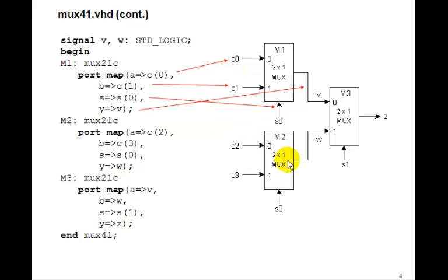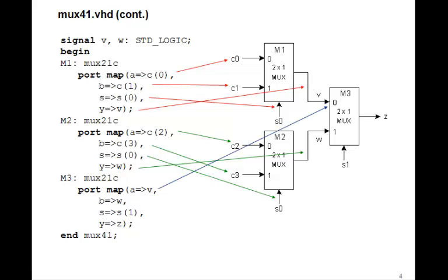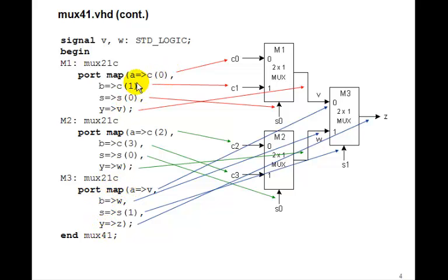For the second mux m2: its a gets connected to c2, its b gets connected to c3, its s gets connected to s0, and its y gets connected to w. Finally, the last 2-to-1 mux m3 has inputs v and w and output z: its a gets connected to v, b gets connected to w, s gets connected to s1, and y gets connected to z. The component names are the same on the left-hand side of the port map statements; on the right you wire them to whatever inputs, outputs, or signals they connect to.